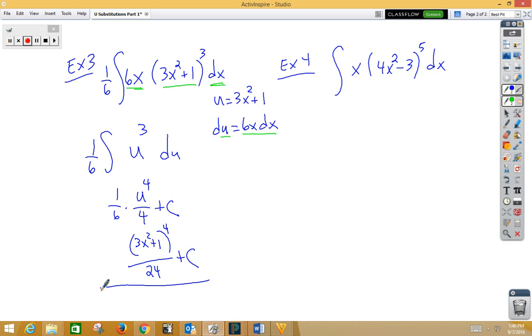Last example, our inside function is 4x squared minus 3. So u is 4x squared minus 3. du would be 12x dx.